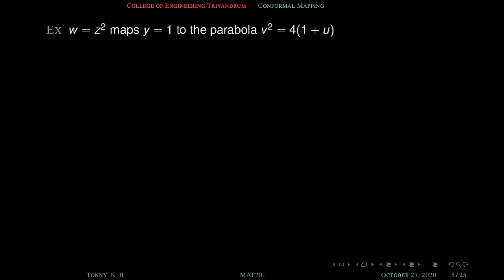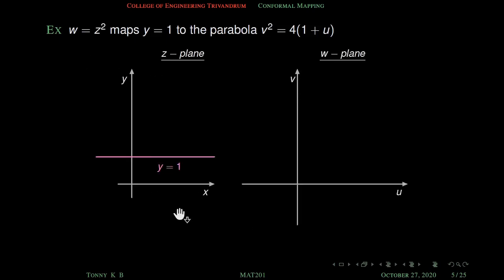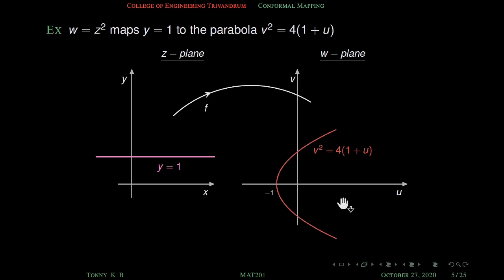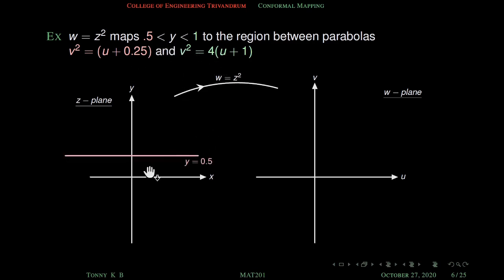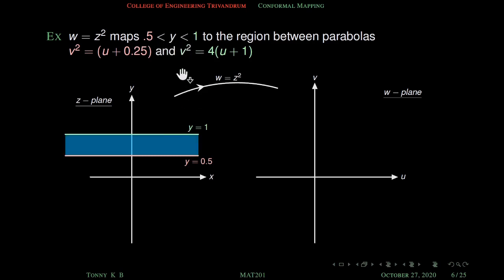For example, w = z² maps y = 1 to the parabola v² = 4(1 + u). Similarly, w = z² maps the region 0.5 < y < 1 between these two parabolas. The line y = 0.5 is a straight line parallel to the x-axis, and y = 1 is also a straight line. The region between them, where x has no restriction, is an infinite strip.